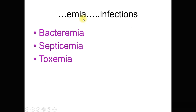Next are the aemia infections — bacteremia, septicemia, and toxemia. Bacteremia means the presence of bacteria in the blood. Septicemia means the pathogen is present in the blood and also multiplying, with sepsis. Toxemia means the pathogen is there and also releasing toxin products.